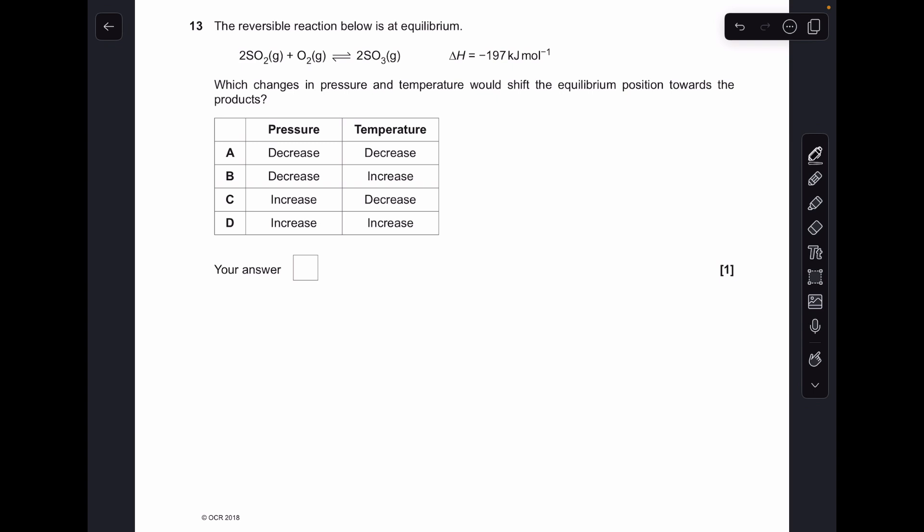Moving on to 13, so changes in pressure and temperature to shift the equilibrium towards the products, so we'll start with pressure, so we'll need to look at how many moles of gas we've got on each side of the equilibrium, so obviously we've got three moles of gas on the left, we've only got two on the right, so a high pressure or an increase in pressure is going to favour that forwards reaction with the fewer moles of gas, so we'll get rid of A and B, and the next thing we need to appreciate is the forward reaction is exothermic, we can tell that from that negative delta H sign, and so therefore we need a lower temperature or decrease in temperature to favour the forwards reaction, so that means option C is the right answer.